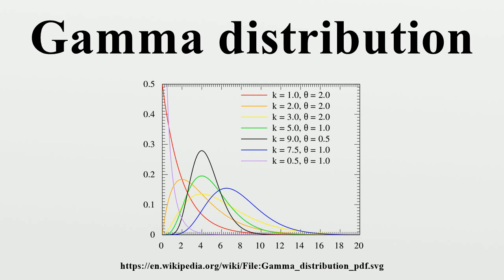Because one of the sufficient statistics of the gamma distribution is ln(x). Information entropy: the information entropy is given in the k-θ parametrization. The Kullback–Leibler divergence of Gamma(α, β) from Gamma(α₀, β₀) is also given in the k-θ parametrization. The Laplace transform of the gamma PDF is also provided.